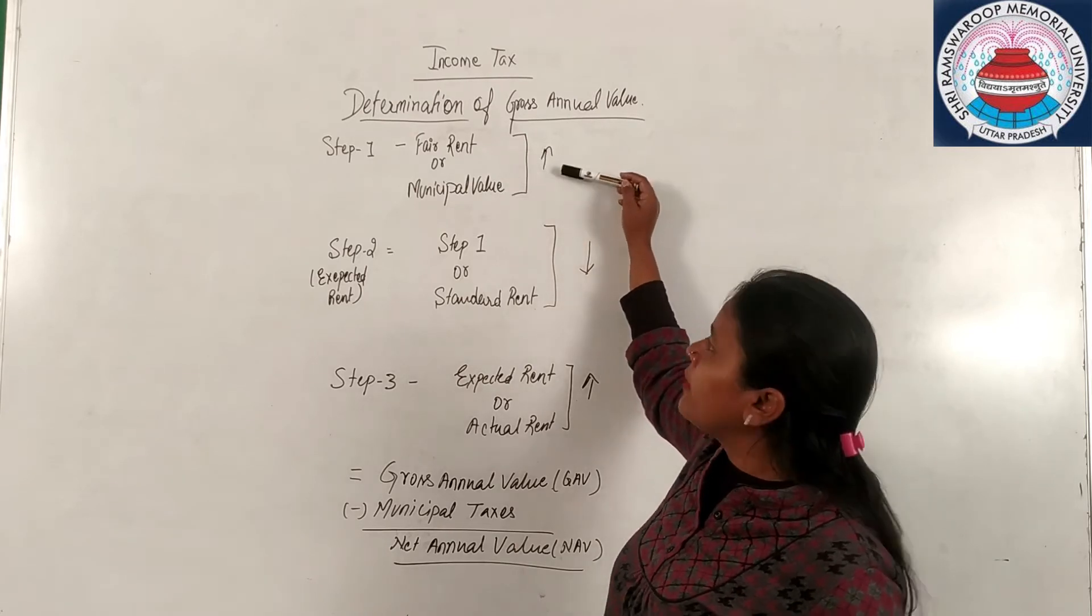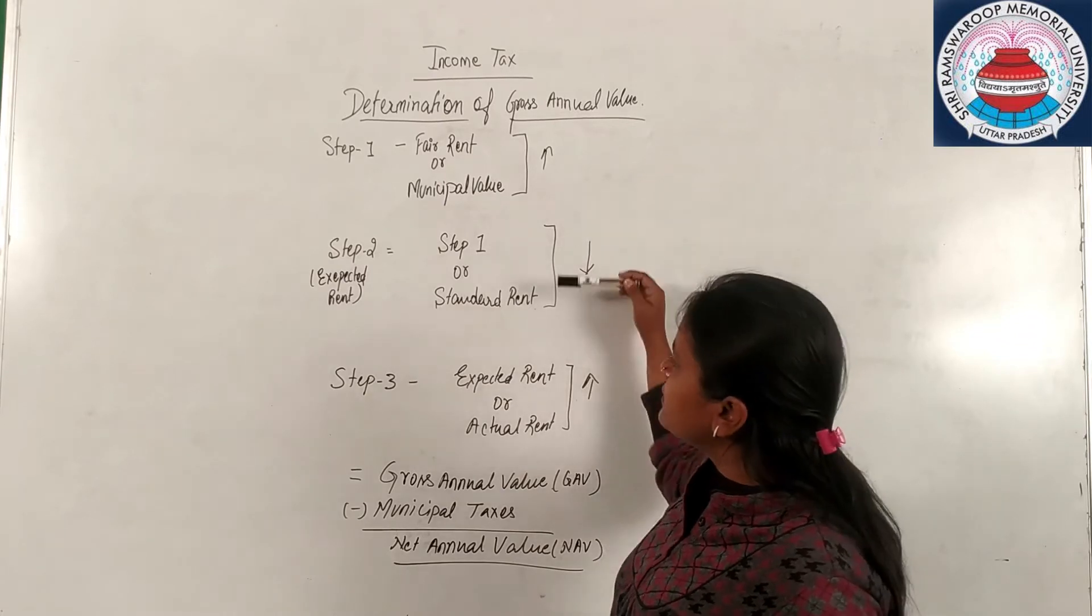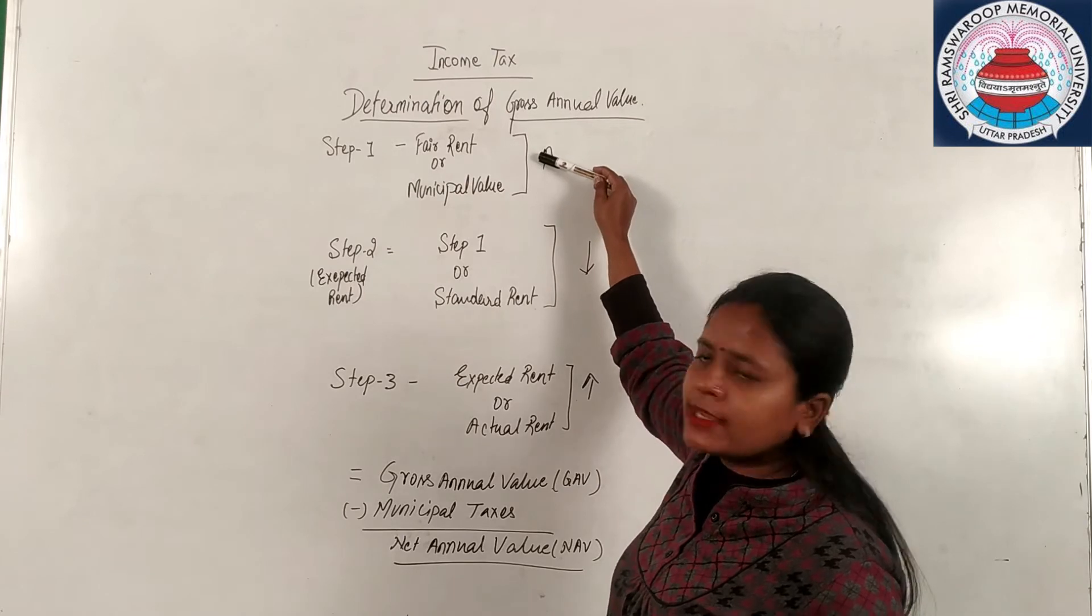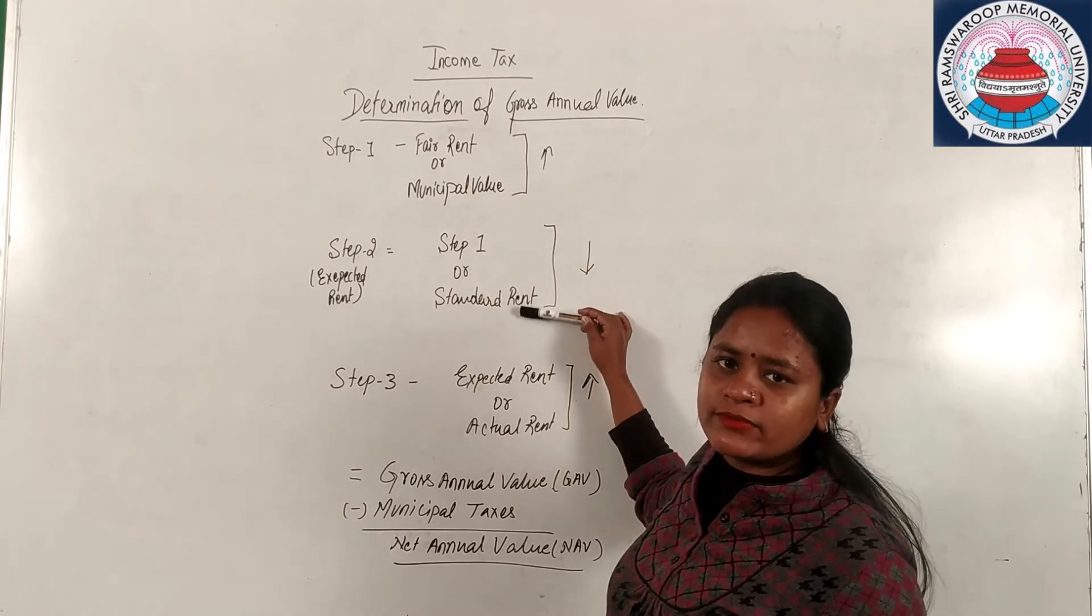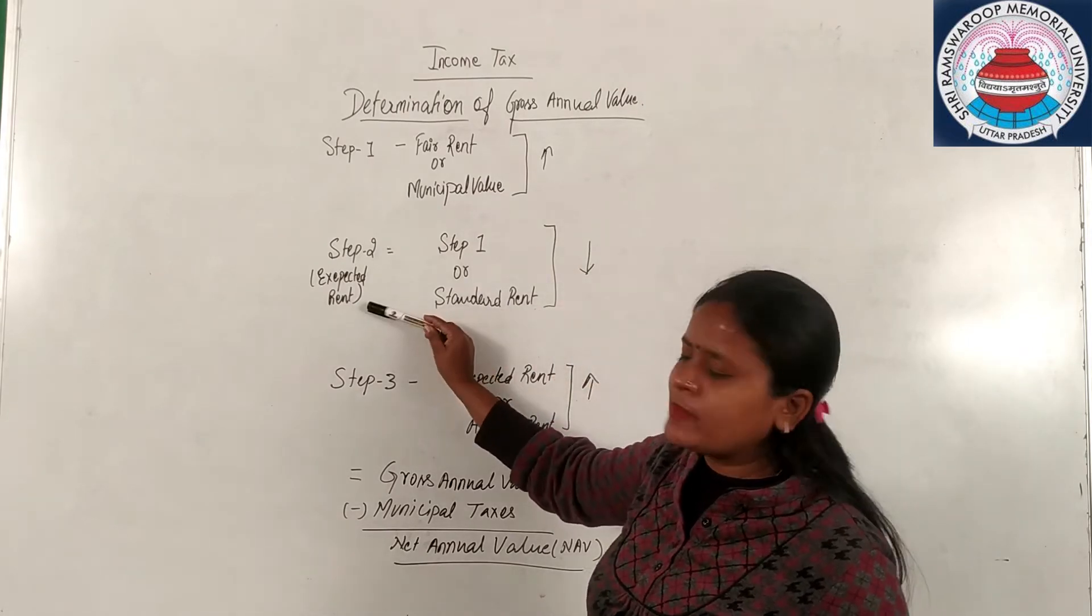We will compare these two and whichever is higher will be treated as step one answer. In step two we will calculate step one which we have already computed. Step one or standard rent we will compare these two and whichever is lower will be your expected rent.